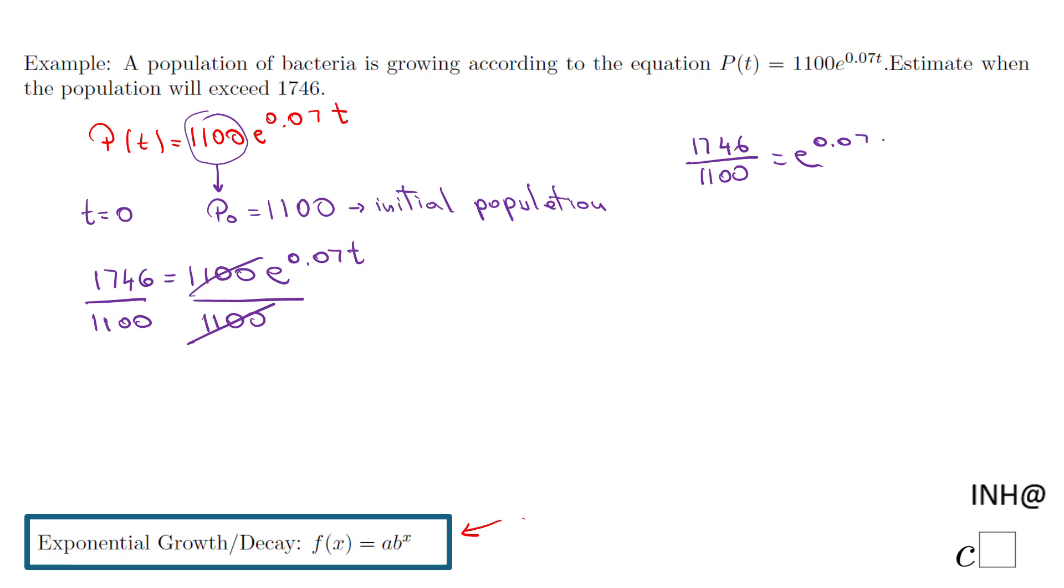So now what do we need to do to find t? We're going to take the logarithm of both sides. Natural log of the left side, and you may want to use a parenthesis. You don't really need it, but be sure that means the natural log of this quotient.